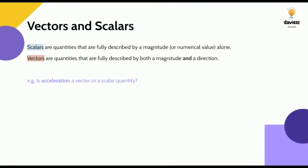So let's have a look at an example. Acceleration. Is it a vector or a scalar quantity?